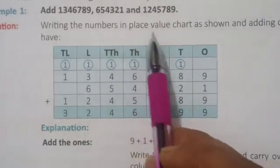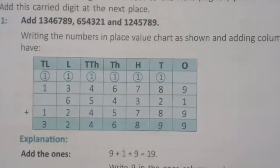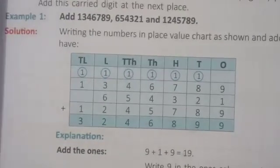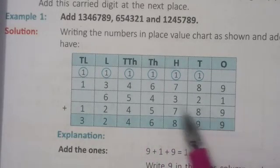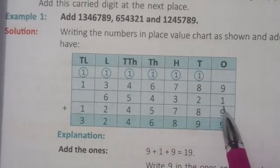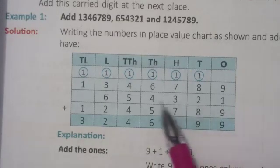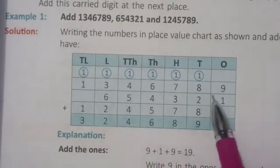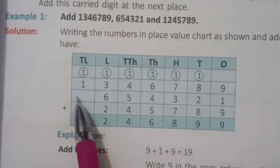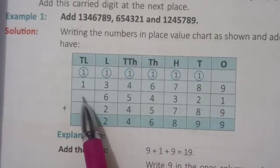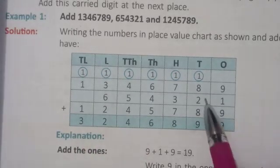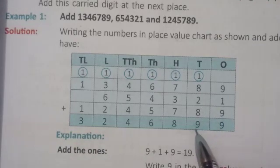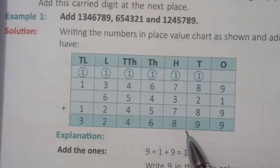Now writing the numbers in a place value chart as shown, and adding column-wise. We will keep adding the numbers in place value columns one below the other. Start adding from the ones column and proceed to the left up to the greatest place value. Carry over the tens digit of the sum to the next higher place if it exceeds 9. We will carry the digit to the next value of the sum and add this carry digit at the next place.